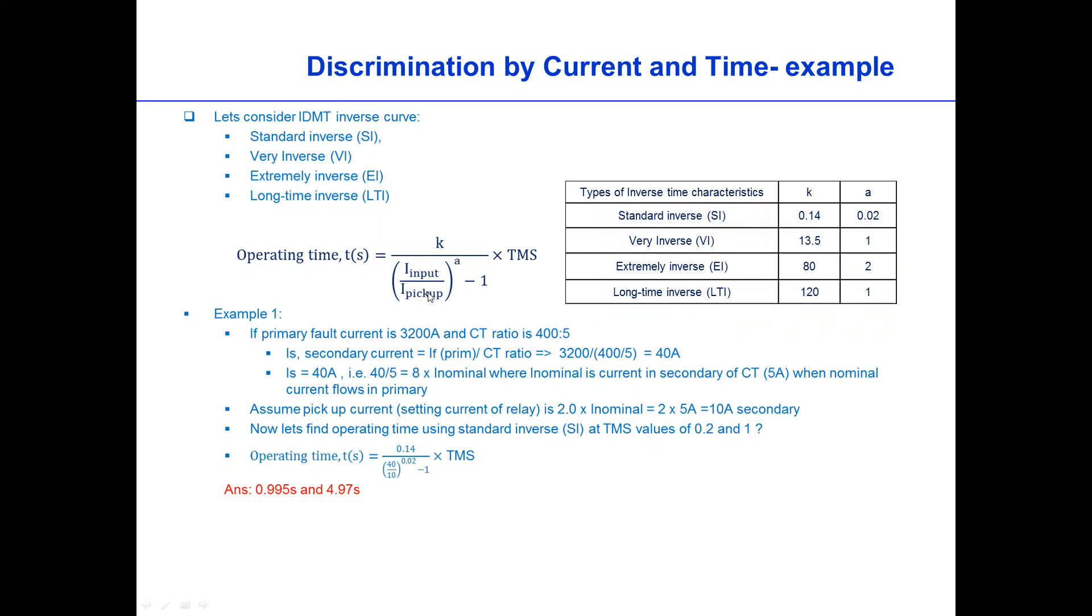So we can just use this equation and plug in the values, the input current of the secondary value is 40, the setting current is 10. And then if we put TMS 0.2, then the trip time will be 0.99, which is one second. And then if we put the TMS value is 1, then this will be 4.97 seconds.